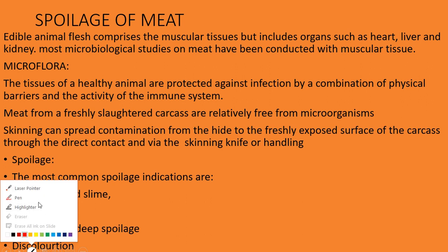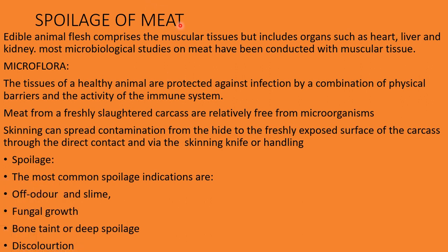Coming to the structure and composition of meat: meat has a high water activity and abundant nutrients, which make it an excellent medium to support the growth of microorganisms. These factors act as an excellent enriched media for the growth of organisms. Edible animal flesh comprises principally the muscular tissues but also includes organs such as heart, liver, and kidney. However, most microbiological studies on meat have been conducted only with the muscular tissue.